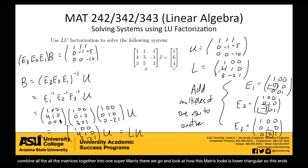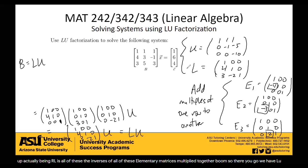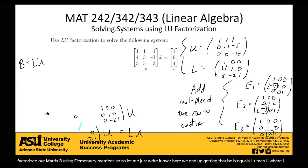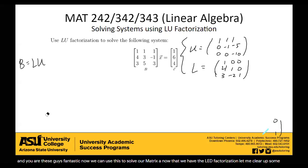So there you go — we have LU factorized our matrix B using elementary matrices. We end up getting that B equals L times U, where L is that lower triangular matrix and U is the upper triangular matrix.